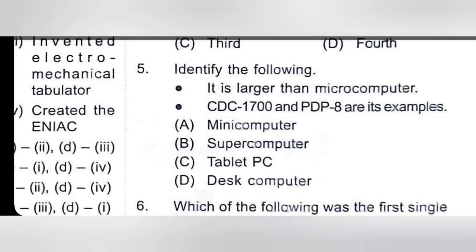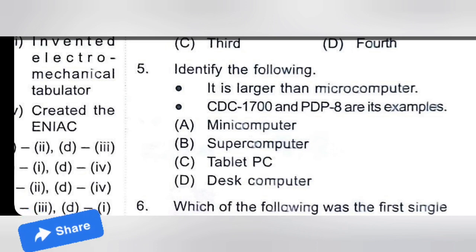Identify the following: it is larger than a microcomputer. CDC 1700 and PDP-8 are its examples. We have to tell what it is. The first thing written is that it is larger than a microcomputer. The right option is mini-computer. Mini-computer is a class of smaller general-purpose computers.